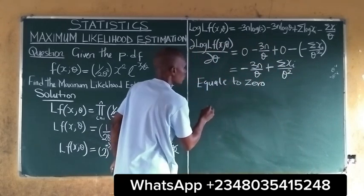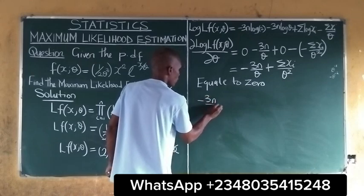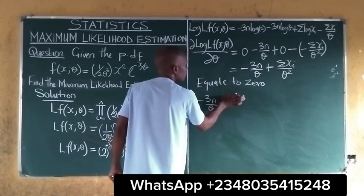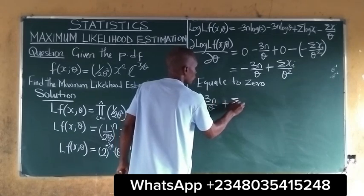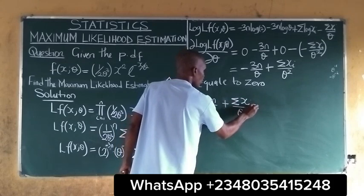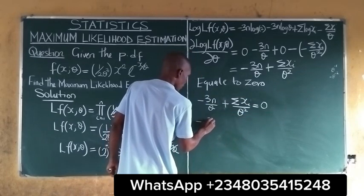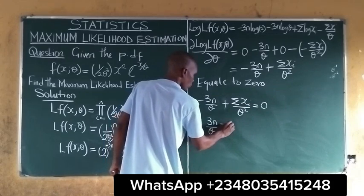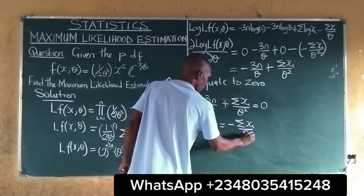Equating the whole expression to zero, we get: negative 3n all over theta plus summation of xi all over theta squared equals zero. This rearranges to: negative 3n all over theta equals negative summation of xi all over theta squared.